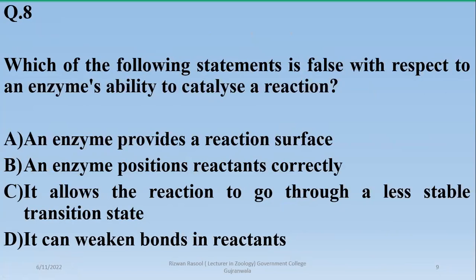Number eight: which of the following statements is false with respect to an enzyme's ability to catalyze a reaction? The right option is Charlie. The false statement is that enzymes allow the reaction to go through a less stable transition state — it should be more stable. Enzymes provide a reaction surface, position reactants correctly, and weaken bonds in reactants, but the transition state is more stable, not less stable.